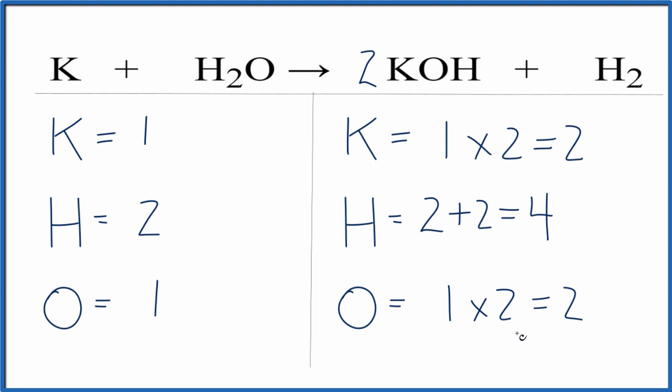Why don't we put a two in front of the water, and that'll fix the hydrogens, and that'll fix the oxygens. So we put a two as our coefficient. Hydrogen's two times two. That gives us four. So the hydrogens are balanced. And then one times the two. That gives us two. We've balanced the oxygen.